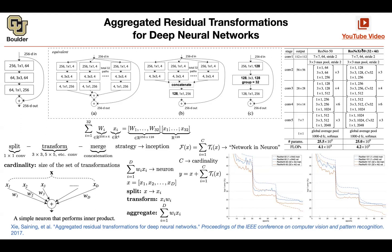ResNext is a more efficient model. As soon as you make your model more efficient, you can scale it up to have the same number of parameters as a more complex model but get more performance out of it. Group convolutions is an idea for more efficient implementations of convolutions. It's not a complex idea — it's basically just this figure.